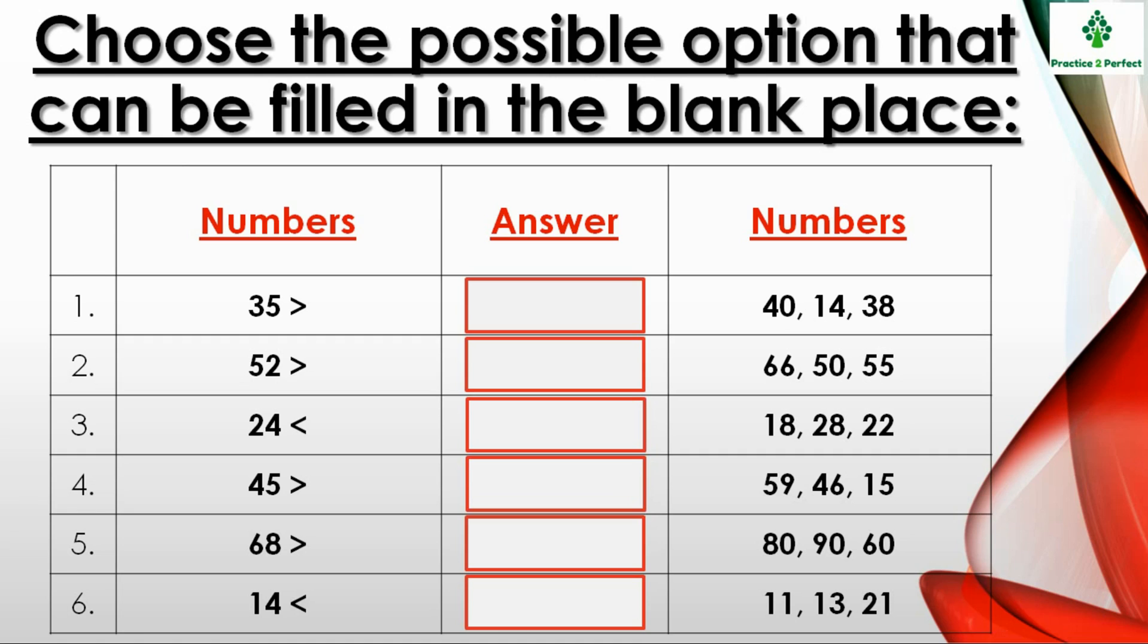Now we will start comparing. Is 35 greater than 40? No it is not. So 40 cannot come in the answer column. We will move to 14. 35 is greater than 14. Is it correct? Yes. 35 is greater than 14. So 14 can come in the answer blank place. Now we will compare 35 and 38. 35 is greater than 38. Is it correct? No it is not because 35 is less than 38. So for the first question out of the three numbers only 14 will come in the answer column.